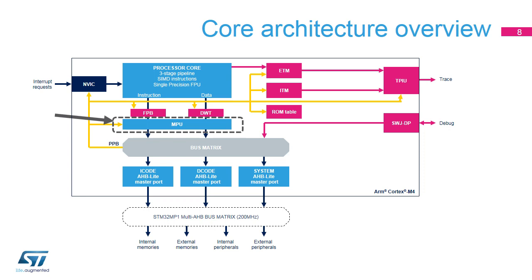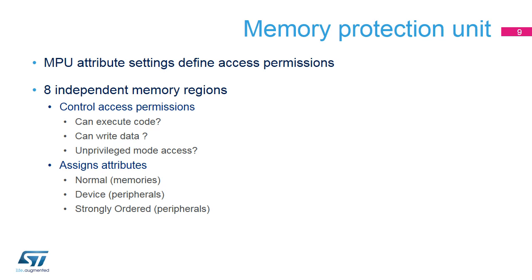In the Cortex-M4 core, the Memory Protection Unit, or MPU, is used to protect address ranges according to the configured access permissions. When enabled, it intercepts any access initiated by the processor core. The MPU in the STM32MP1 microprocessor offers support for 8 independent memory regions with independent configurable access permissions: allowed or not read-write in privileged or unprivileged mode, and execution permission — executable region or region prohibited for instruction fetch.